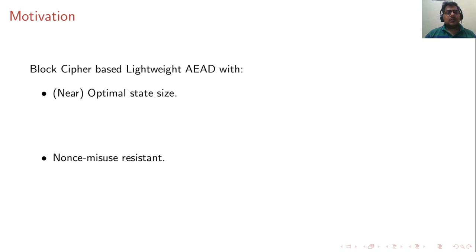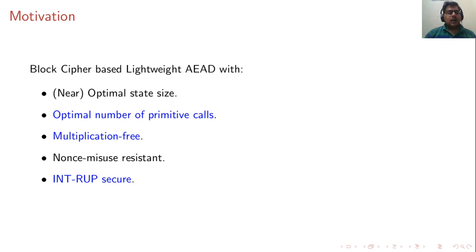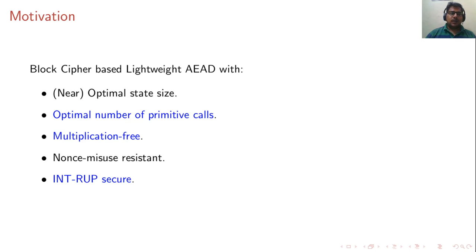Our motivation is to design a block cipher based lightweight AEAD that achieves: near-optimal state size like Sunday; nonce-misuse resistance like Sunday; an optimal number of primitive calls, reducing that additional call to zero; a multiplication-free construction (Sunday uses multiplications by constant field elements, and we want to remove all operations apart from block cipher calls); and finally, int-RUP security, so the adversary cannot forge even when given access to unverified plaintext.